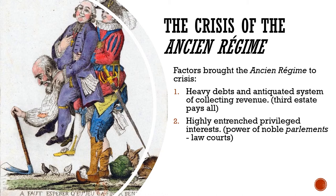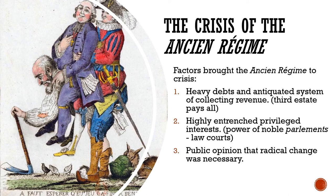The other problem was entrenched noble privileges. Nobles had power in many ways — they were part of the few checks and balances on absolute kings, members of the Parlement which interpreted the king's rules — while the third estate had none of these privileges. The third factor was that France was the center of the Enlightenment, with a lot of public opinion that the only way to solve the problems of French society was radical change. Philosophes like Voltaire and Rousseau were spreading ideas, making French society ripe for revolution.